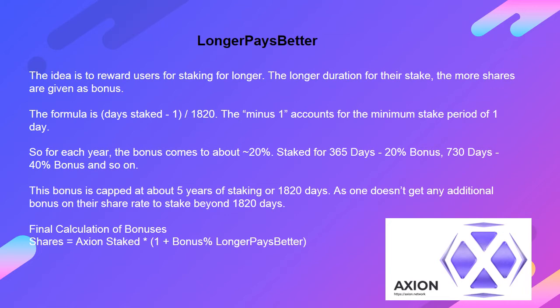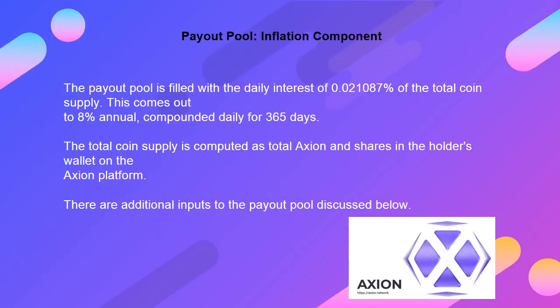Final calculation of bonuses: Shares = Axion staked × (1 + bonus percent). The payout pool is filled with the daily interest of 0.021087% of the total coin supply. This comes out to 8% annual, compounded daily for 365 days. The total coin supply is computed as total Axion and shares in the holder's wallet on their Axion platform. There are additional inputs to the payout pool discussed below.